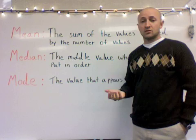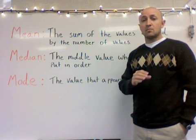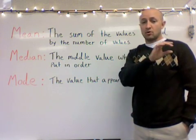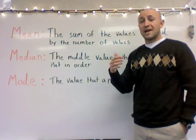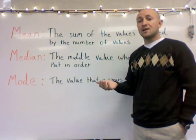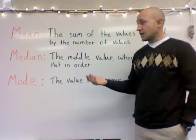So if we get a list of numbers, what we're going to do is take those numbers, put them in order from least to greatest, then add them all up, and divide by how many numbers we have.